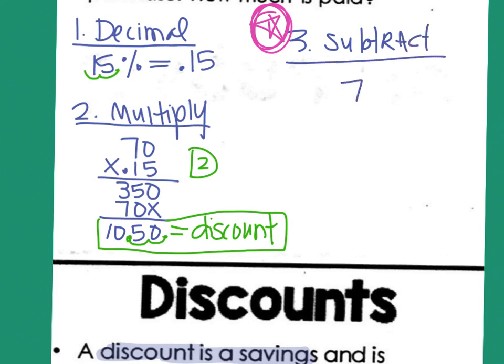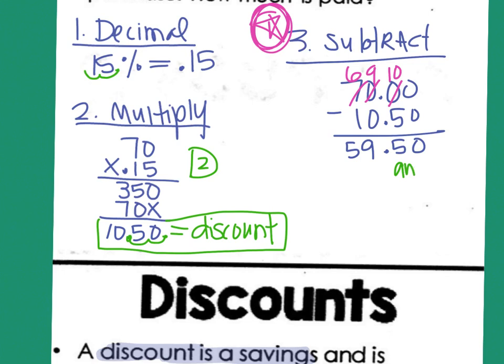The original number, remember, was $70. So 70.00. I'm going to minus $10.50. So this one you have to borrow because I can't do 0 minus 5. So we'll make that set up ready to borrow. 0 minus 0. 10 minus 5 is 5. 9 minus 0. 6 minus 1 is 5. So now I know that this is the actual amount paid. That's the way the question asked. What's the amount paid after the discount? $59.50.